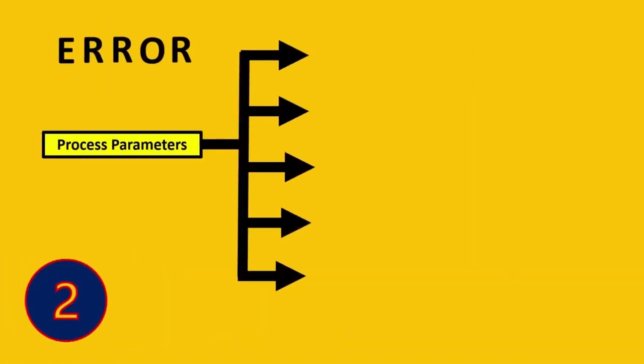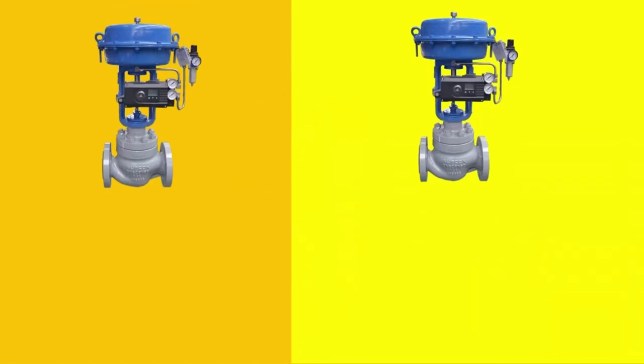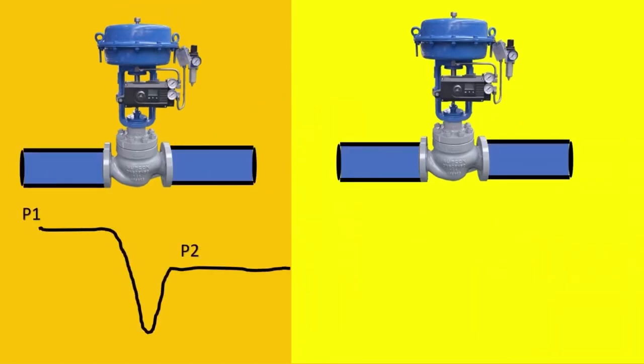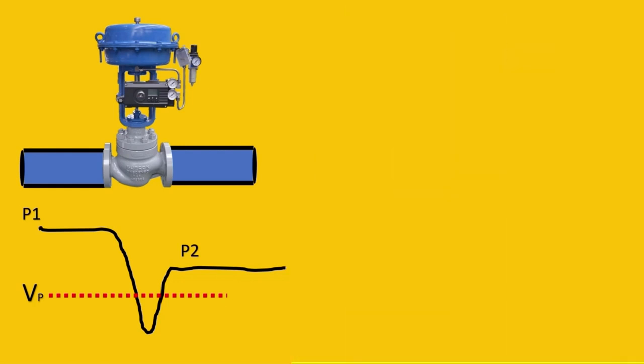The second solution in the ERROR acronym is R, which stands for reduce the downstream pressure P2. Imagine you have two valves with the same pressure drop curve. You change the downstream pressure while P1 remains the same. Both have the same vapor pressure curve and pressure drop, but the downstream pressure here is significantly reduced.